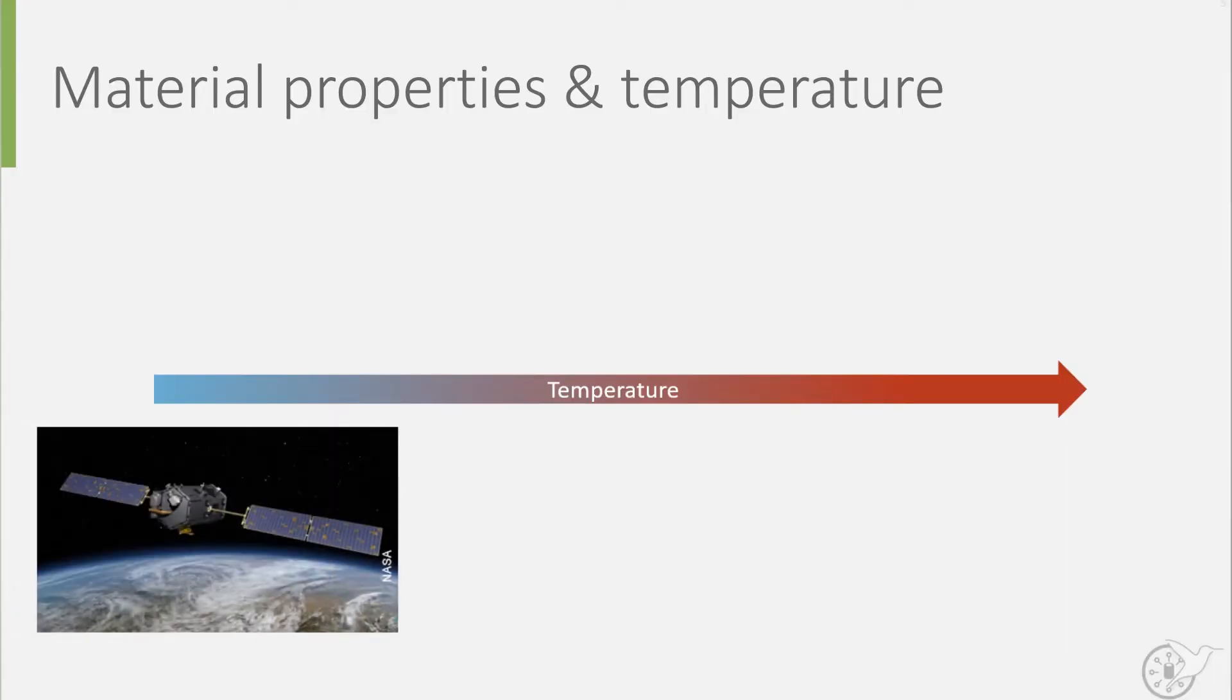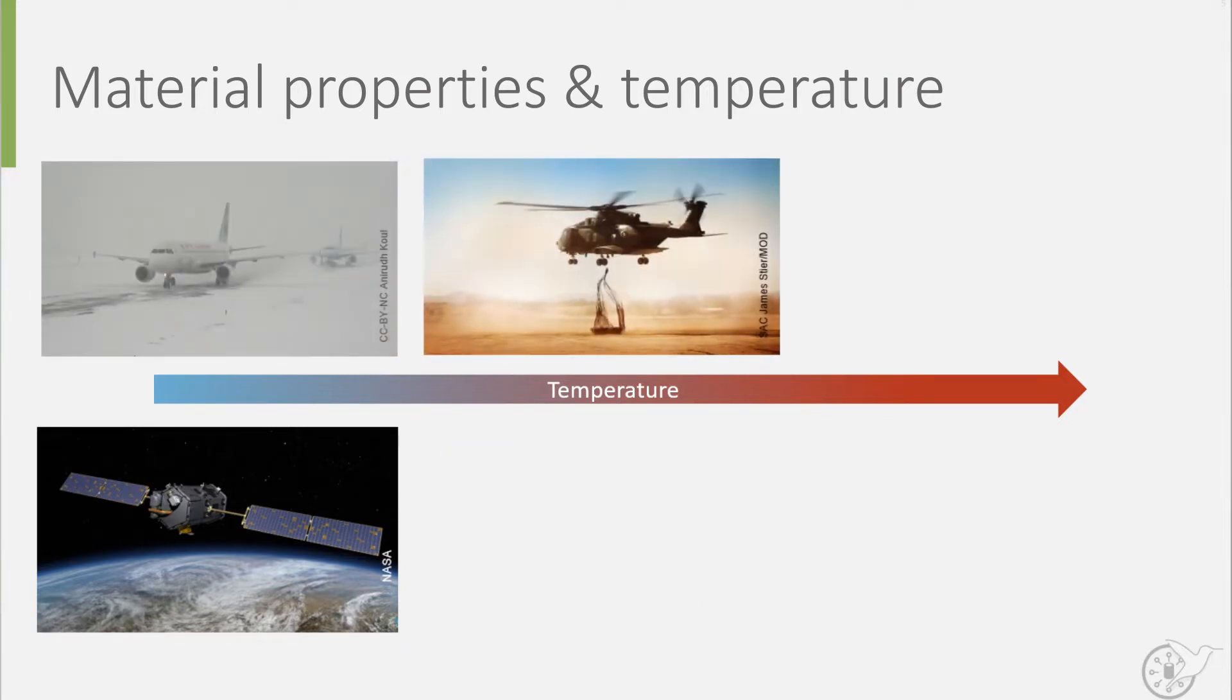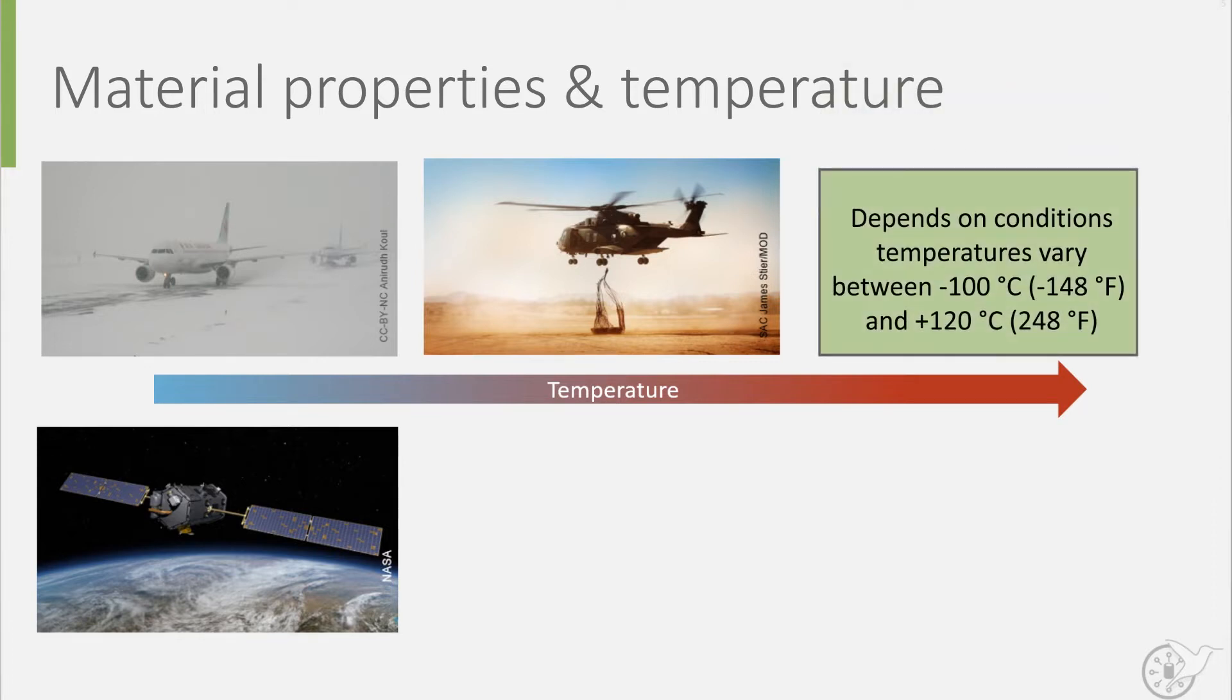For instance, in space it is pretty cold. In outer space the temperature reaches minus 270 degrees Celsius. Closer to earth it depends on whether an object is in the sun or in the shade, with temperatures varying from 120 degrees Celsius to minus 100 degrees Celsius.